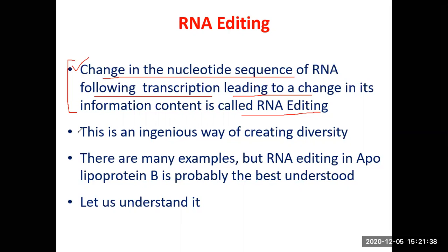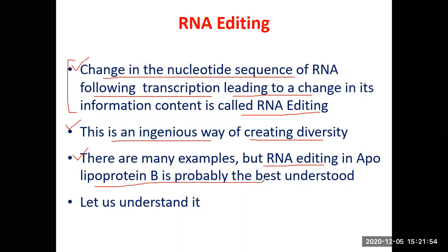This process happens mostly in eukaryotes and it is an ingenious, novel way of creating diversity. There are many examples of RNA editing now known in eukaryotes, but RNA editing in apolipoprotein B is probably the best understood. We'll try to understand this process by taking the example of apolipoprotein B.